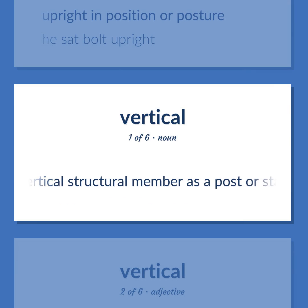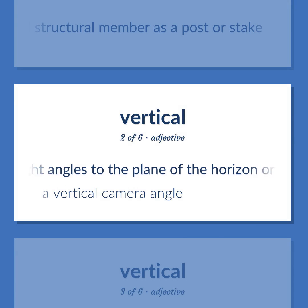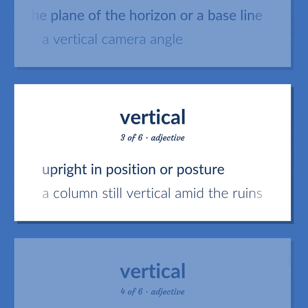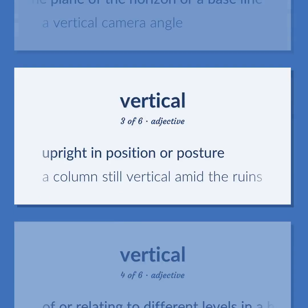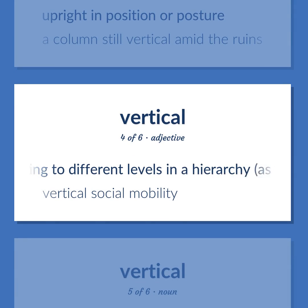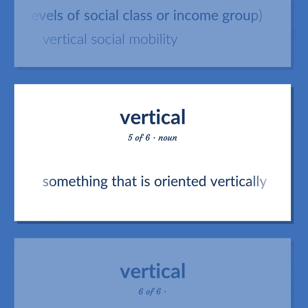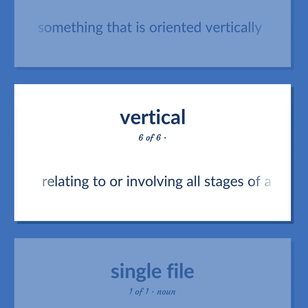Vertical: A vertical structural member such as a post or stake. At right angles to the plane of the horizon or a baseline. Example: A vertical camera angle. Upright in position or posture. Example: A column still vertical amid the ruins. Of or relating to different levels in a hierarchy, as levels of social class or income group. Example: Vertical social mobility. Something that is oriented vertically. Relating to or involving all stages of a business from production to distribution.